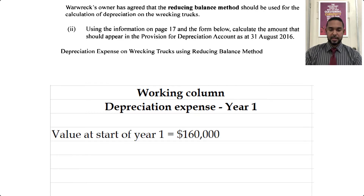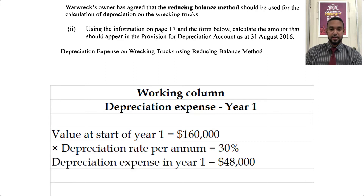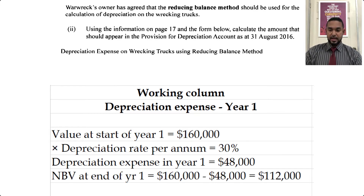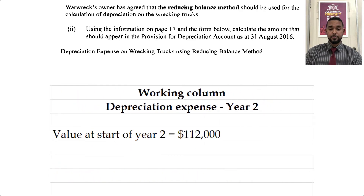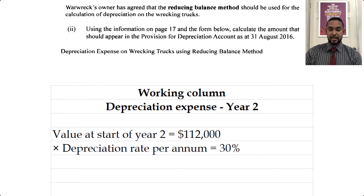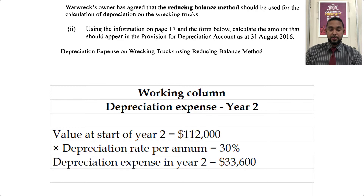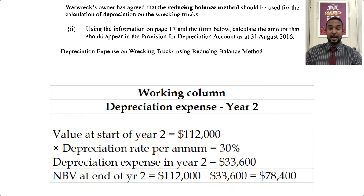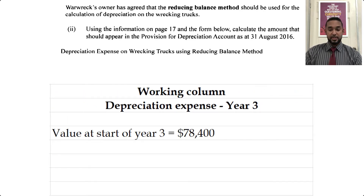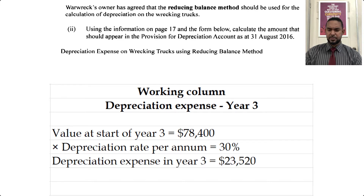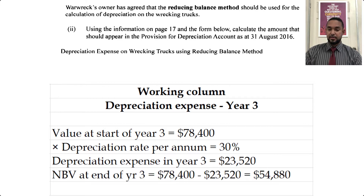In year one, the value at the start is $160,000. The depreciation is 30%, so multiplying by 30% gives us $48,000. The net book value at the end is $160,000 minus $48,000, which gives us $112,000. The value at the end of year one becomes the value at the start of year two. So the value at the start of year two is $112,000. We multiply by 30% per annum — that gives us $33,600. To find the net book value at the end of year two, we subtract $33,600 from $112,000, giving us $78,400. That becomes the value at the start of year three, and multiplying by 30% gives us $23,520.